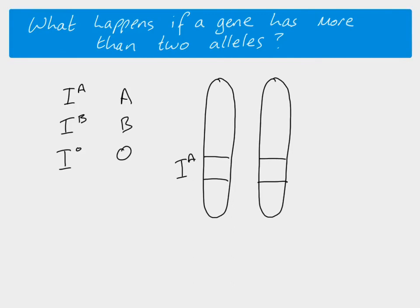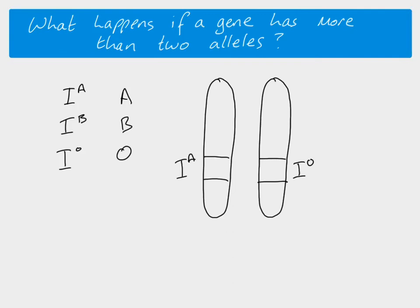If we look at where the alleles are, each chromosome can hold one allele. So one individual might have two copies of allele A, or one allele A and one allele B, or one allele A and one allele O. Even though there are three alleles, there are only two chromosome positions where an allele can be found. So an individual can only carry two alleles, even if there are more than two alleles in the whole population.